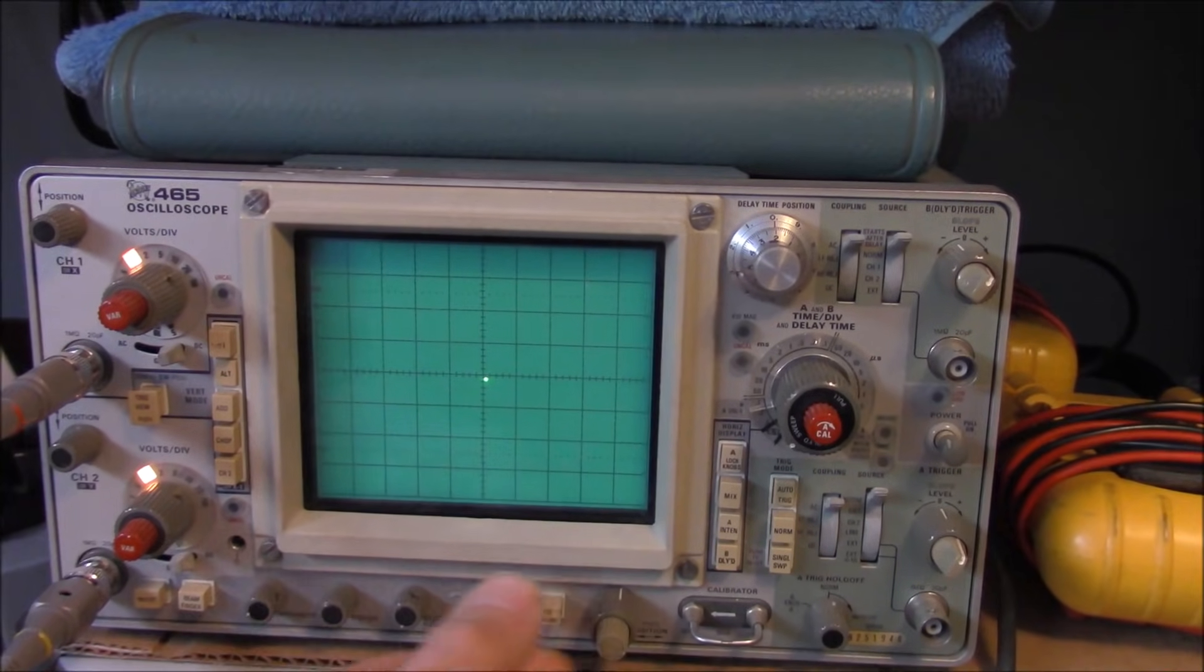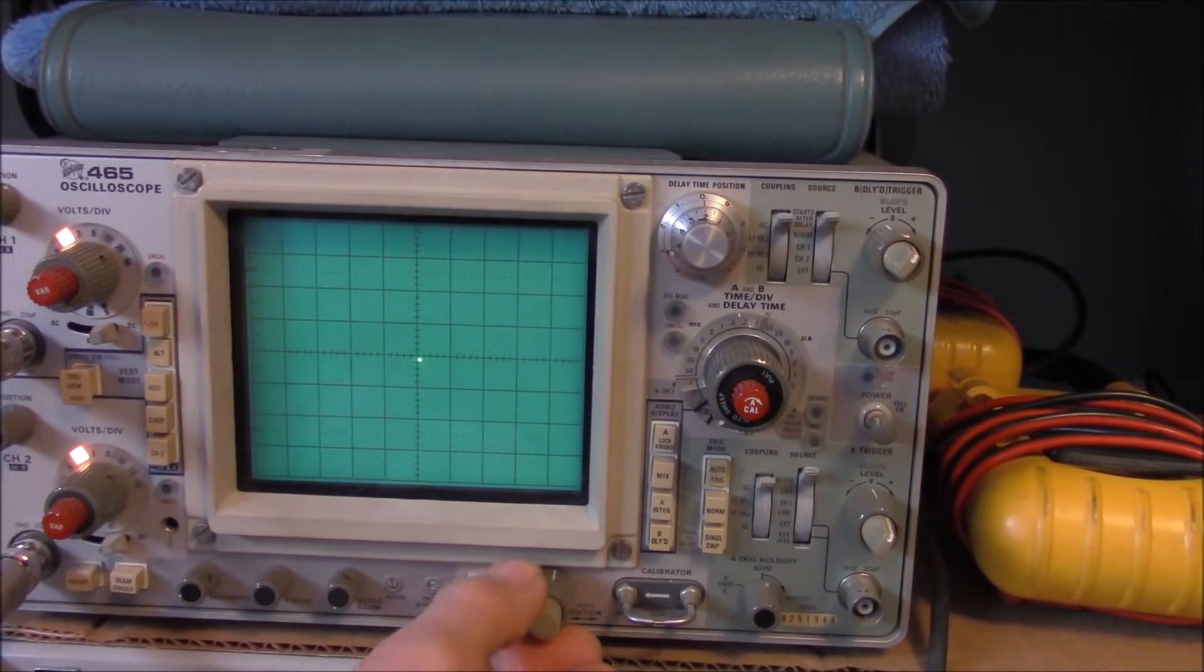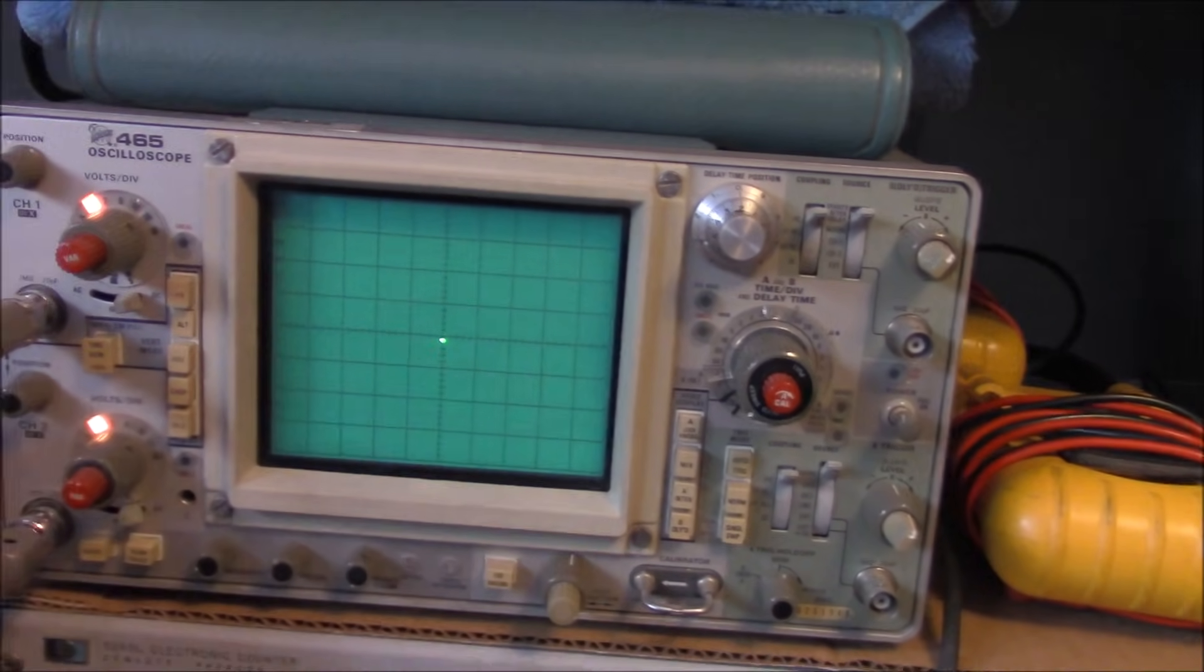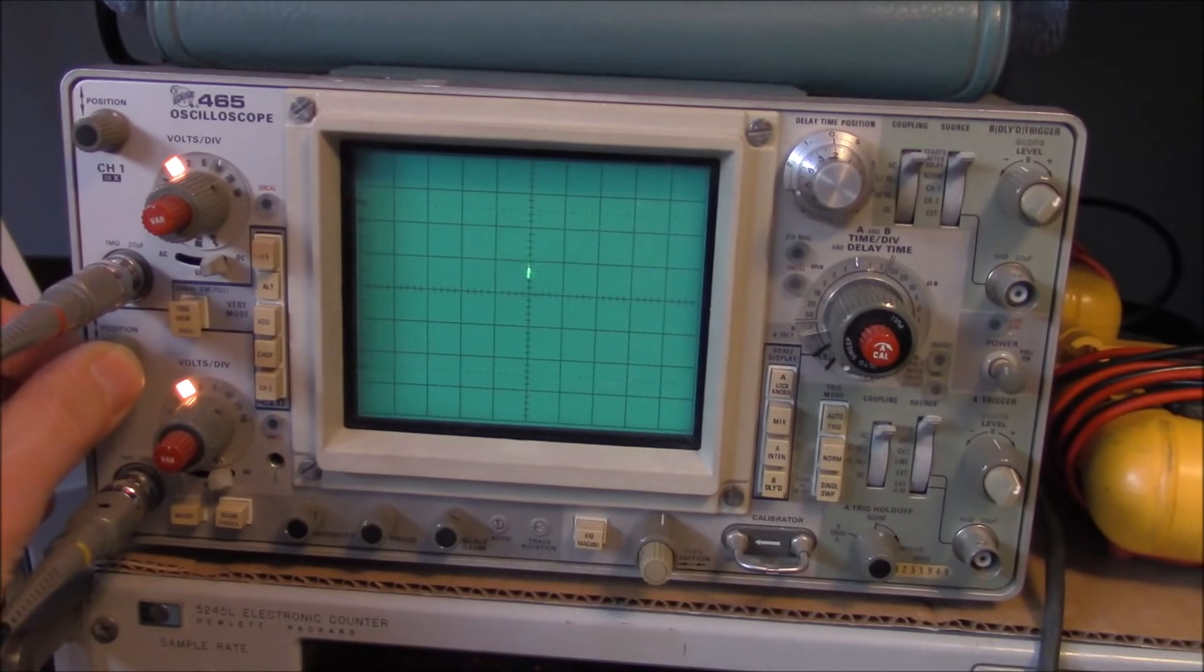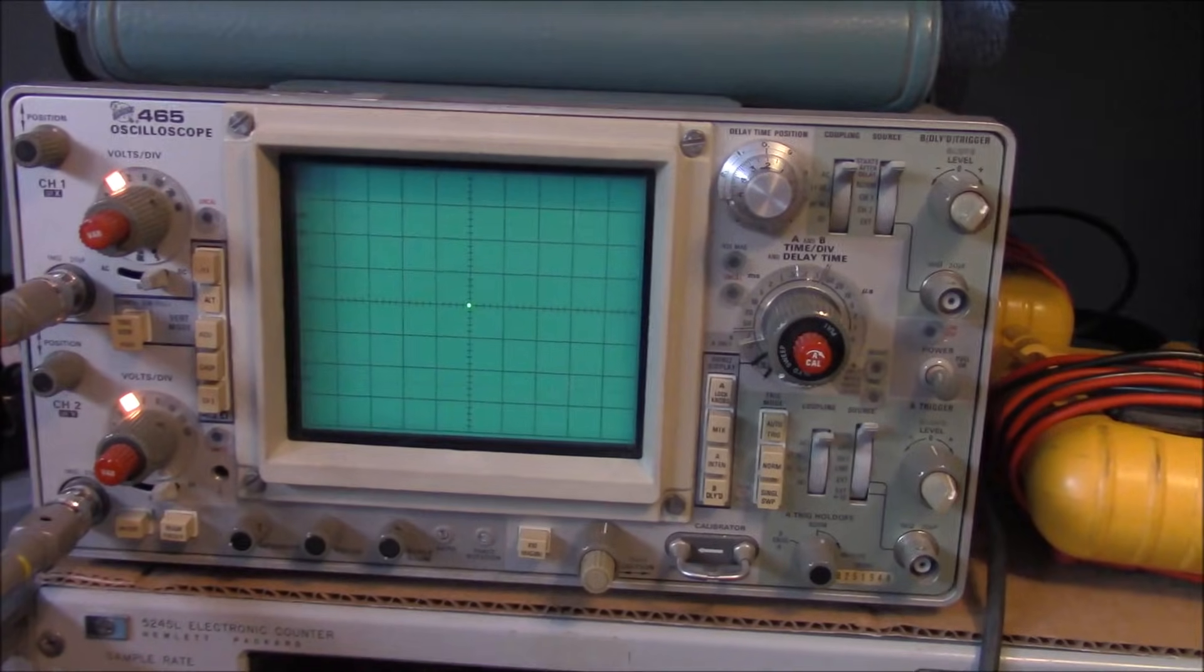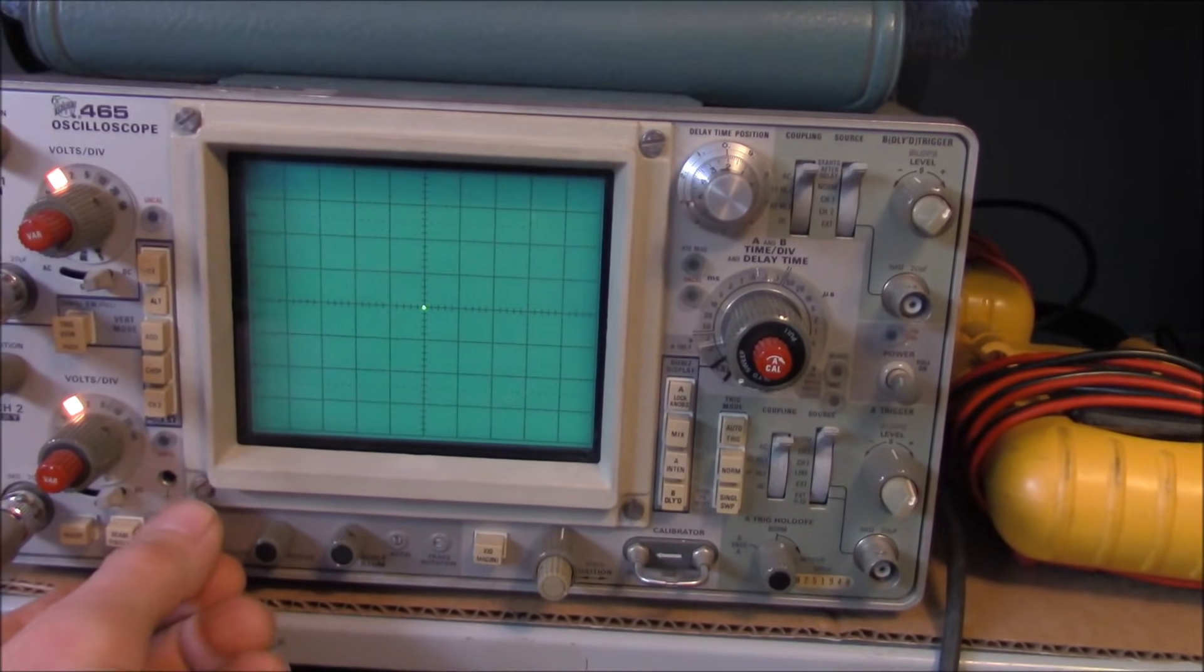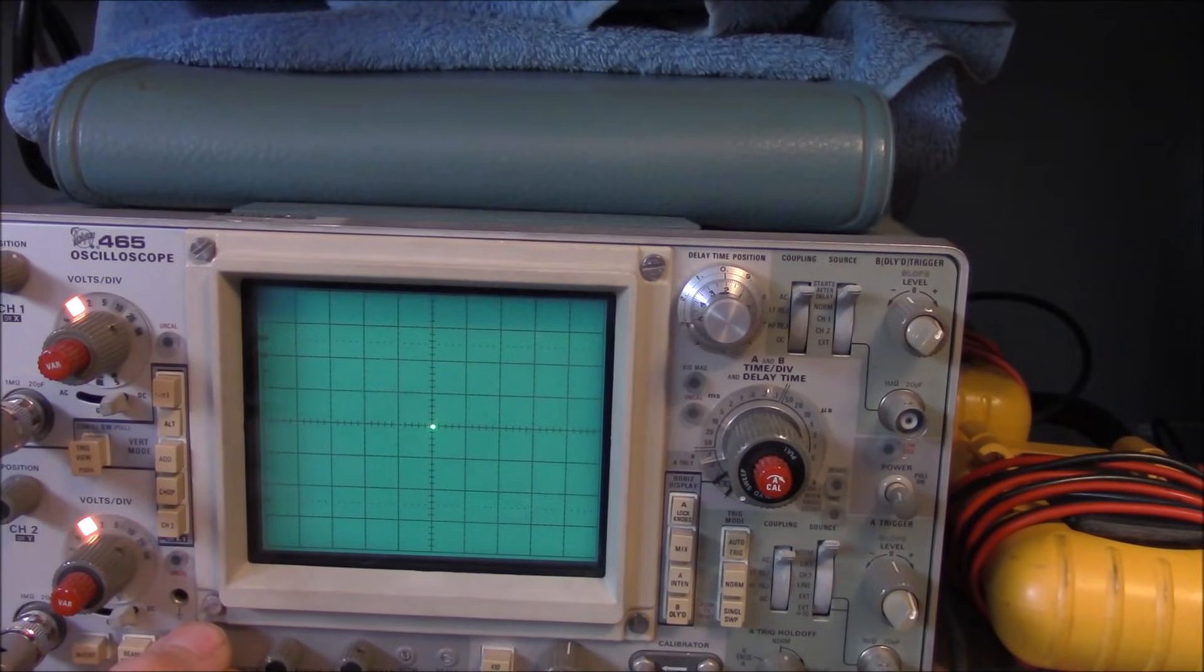Before the signal is applied, we can get the dot centered up. So our horizontal position is down here, and our vertical is on channel 2. And then you're going to apply the signal and then adjust from there. And just be careful with your dots so you don't burn your phosphor.